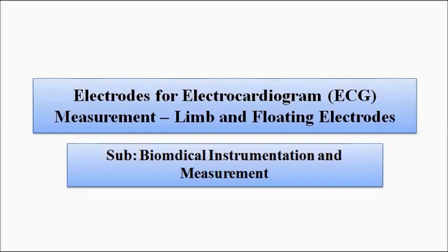Hello friends, welcome to Engineering Tutorial. In the previous videos related to biomedical instrumentation and measurement systems, we discussed recording electrodes, the characteristics of the electrode-skin interface, and the factors which influence biomedical signal measurement. In this video, we are going to discuss the types of electrodes used for biomedical signal measurement, especially for electrocardiogram. The two electrodes we will specifically discuss are the limb and floating electrodes.